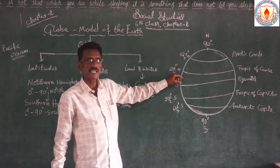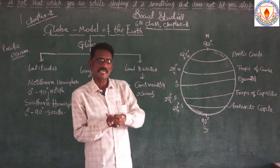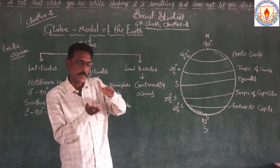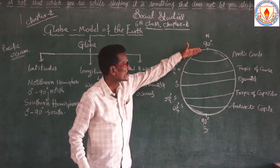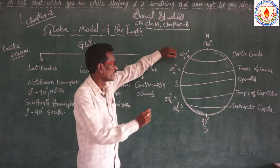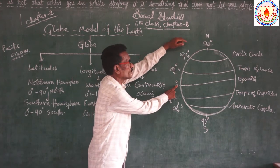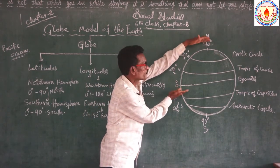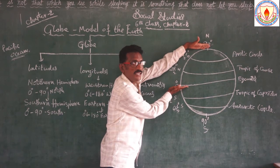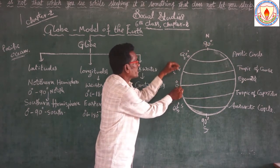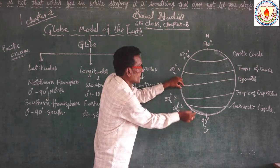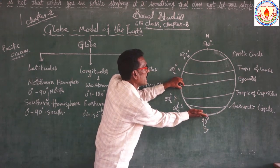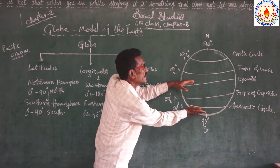The importance of the equator: it divides the earth into two equal halves. From zero degrees to 90 degrees north, this part is called the Northern Hemisphere. From zero degrees to 90 degrees south pole, this part is called the Southern Hemisphere.